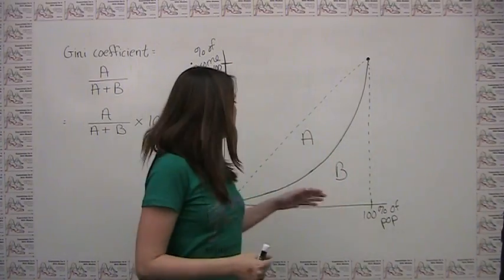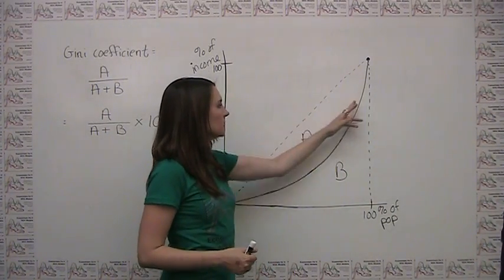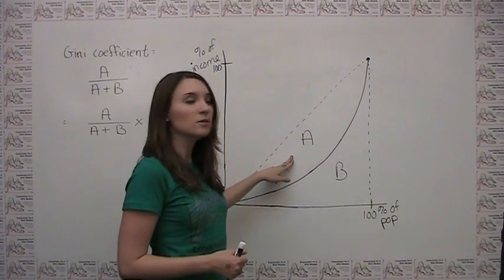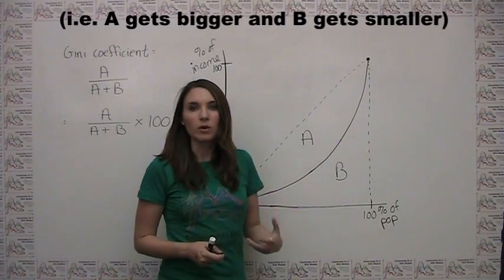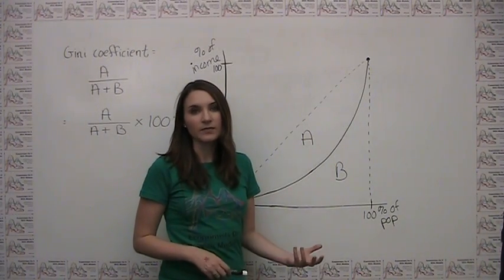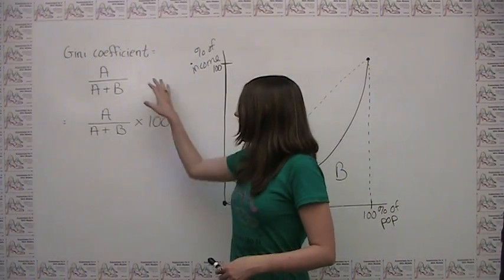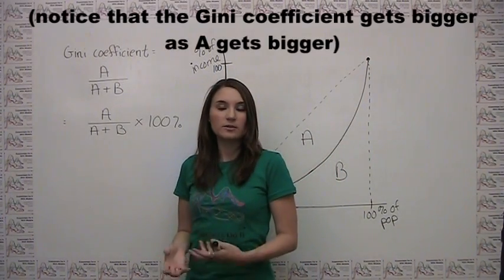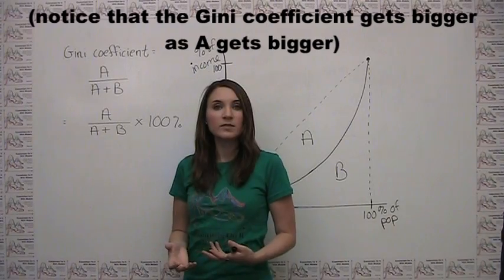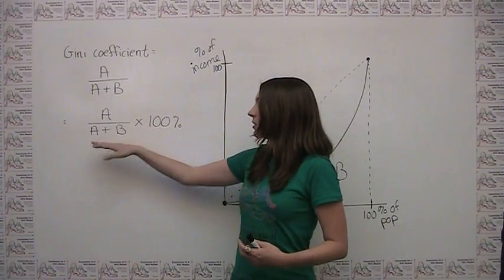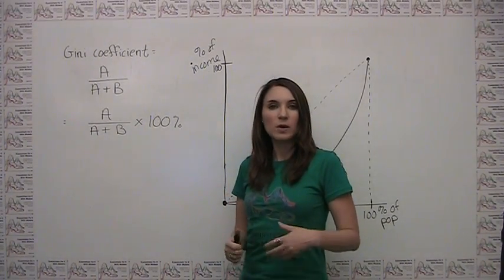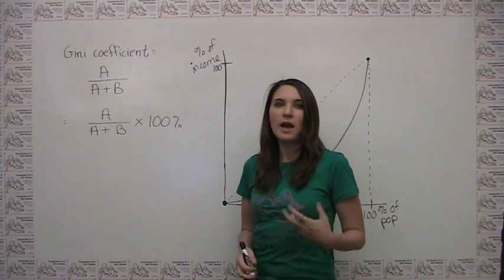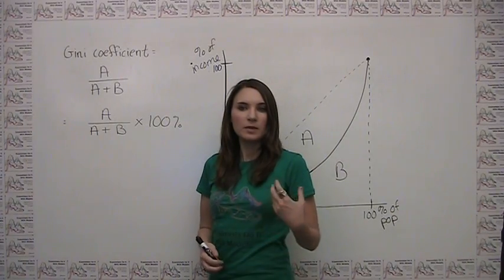As the Lorenz curve gets further and further away from the 45-degree diagonal, we're seeing more and more income inequality in a society. Higher numbers for the Gini coefficient correspond to higher levels of income inequality, and lower numbers correspond to lower degrees of income inequality.